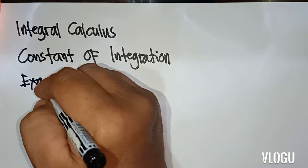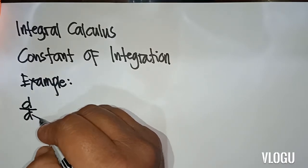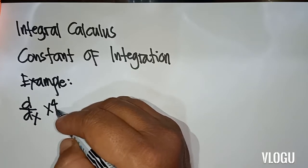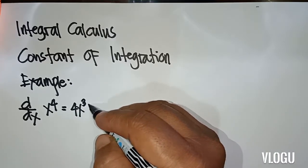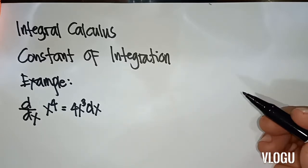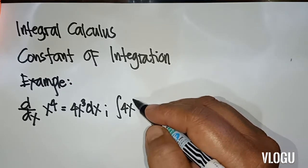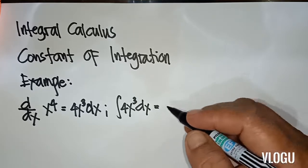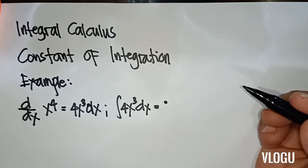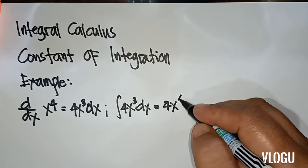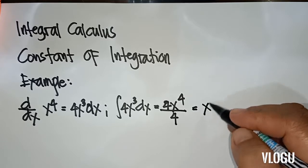For example, we have d/dx of x to the fourth. The derivative for that is 4x³ dx. For the integral of 4x³ dx, the answer is x to the fourth — that is, 4x⁴ over 4, which literally equals x to the fourth.